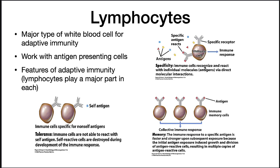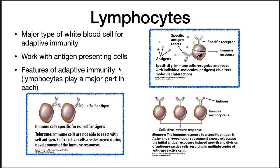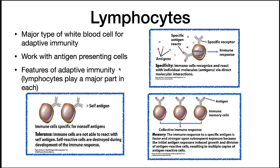Now let's talk about lymphocytes. Lymphocytes are a major type of white blood cell for adaptive immunity. They work with antigen presenting cells and they pretty much embody the features of adaptive immunity. First is specificity: immune cells recognize and react with individual molecules, antigens, via direct molecular interactions, and this specificity is manifested in T cells and B cells. Immune cells are specific for non-self antigens — they don't react to self, and this is because of tolerance. Finally, memory: the immune response to a specific antigen is faster and stronger upon subsequent exposure because the initial antigen exposure induces growth and division of antigen-reactive cells that are then present for a second infection.